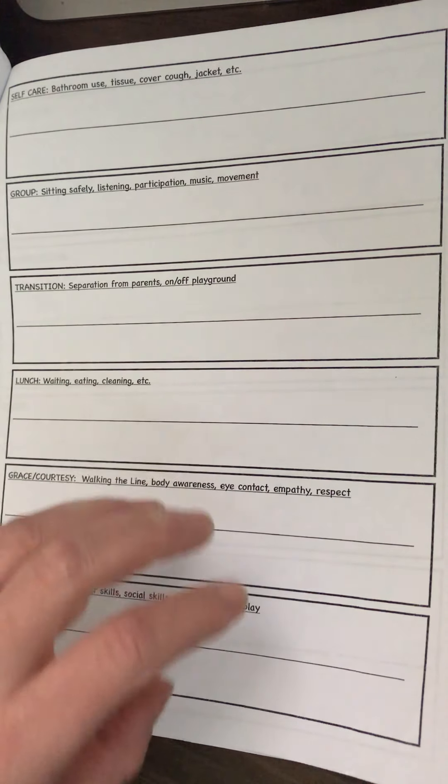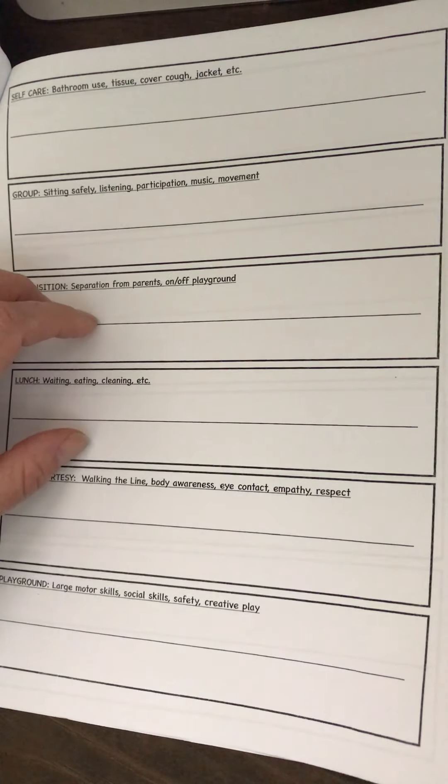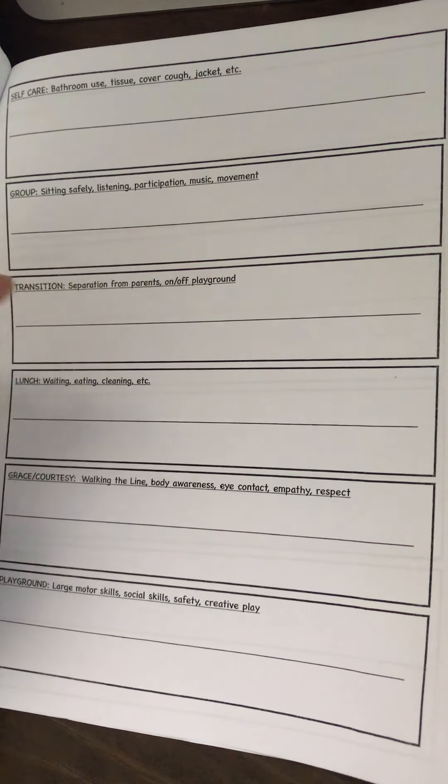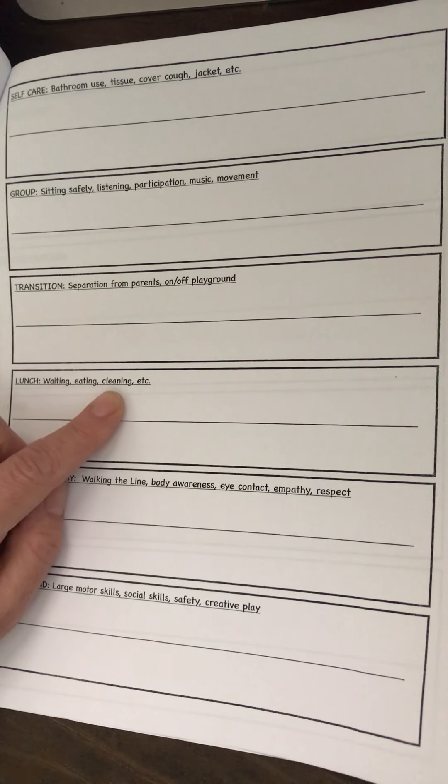How do they separate from their parents? How do they separate - like let's go, time to go in the classroom, or it's time to leave and go to the store now. How are they doing that? How do they transition? Lunch - are they good at waiting for everyone to have their turn? How do they eat? Do they eat everything? Do they clean up when they're done?